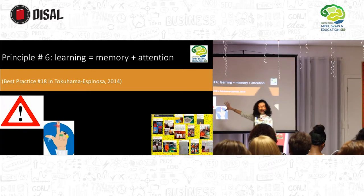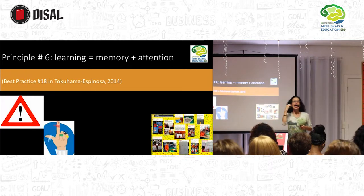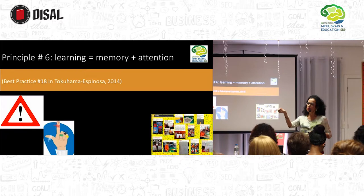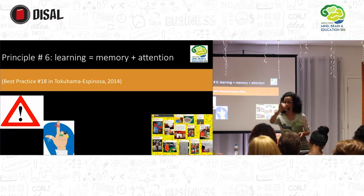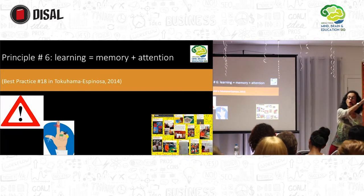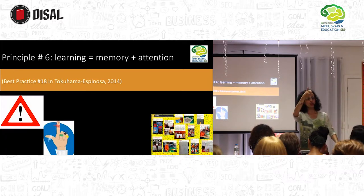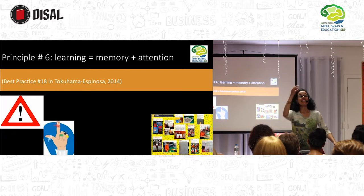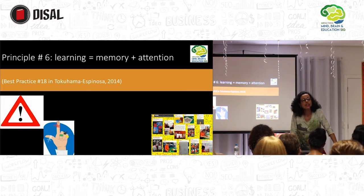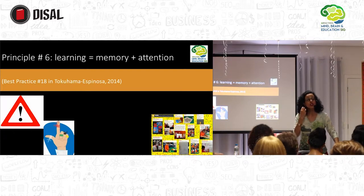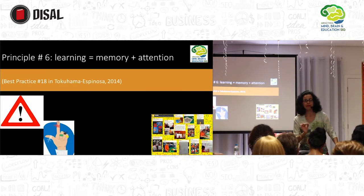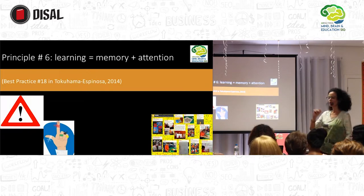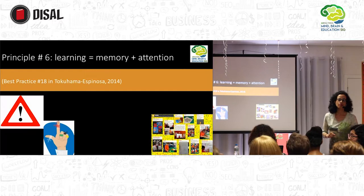Knowing that we need attention and memory, how can we conjure all that with students who can read and write? When the brain learns to read and later write, it is never going to be the same brain it was before. Learning to read reconfigures the brain's circuitry like no other action learned by the human brain. Did you know that? And we all read and write.